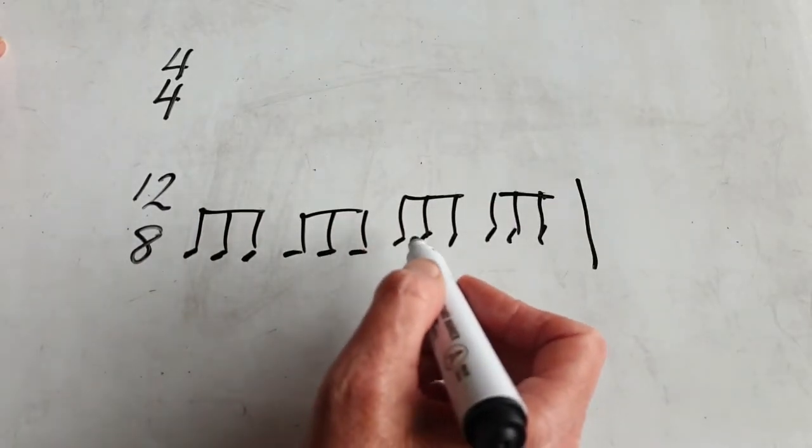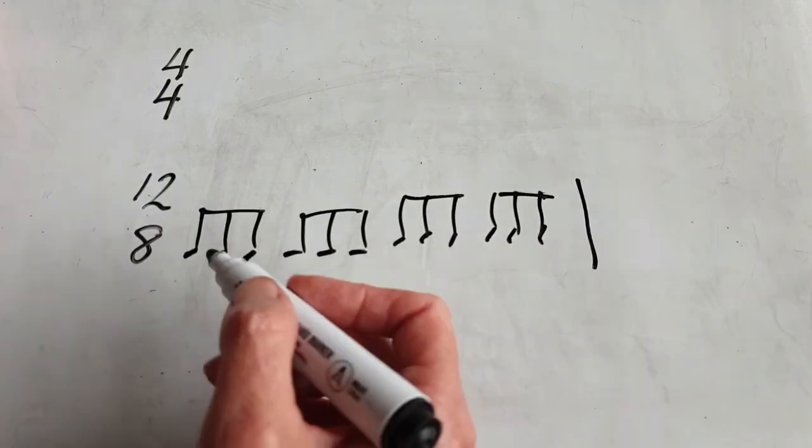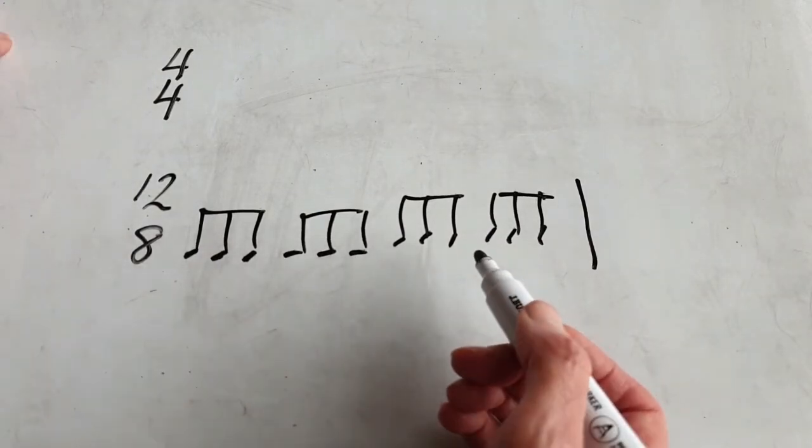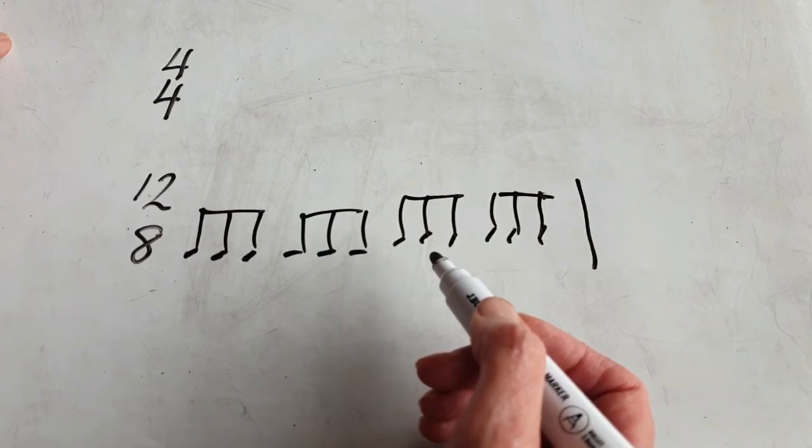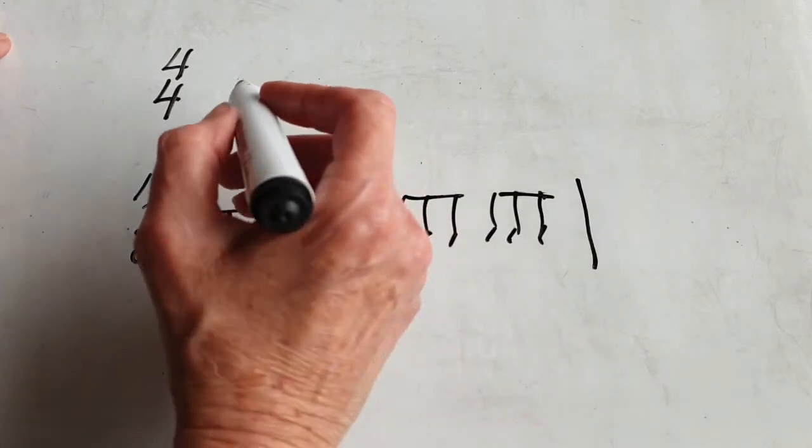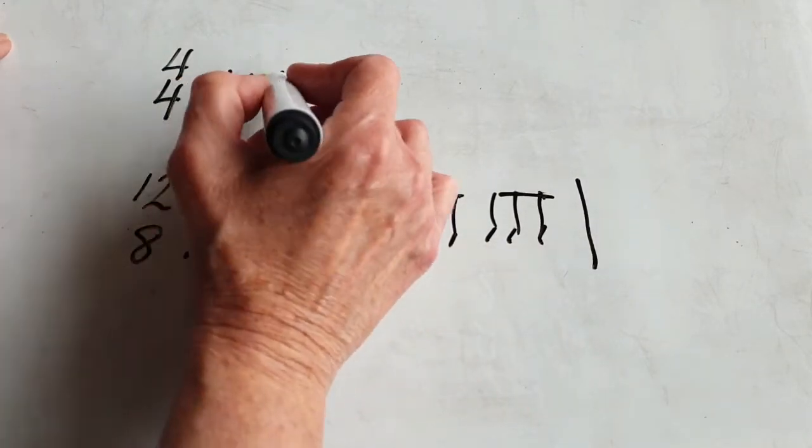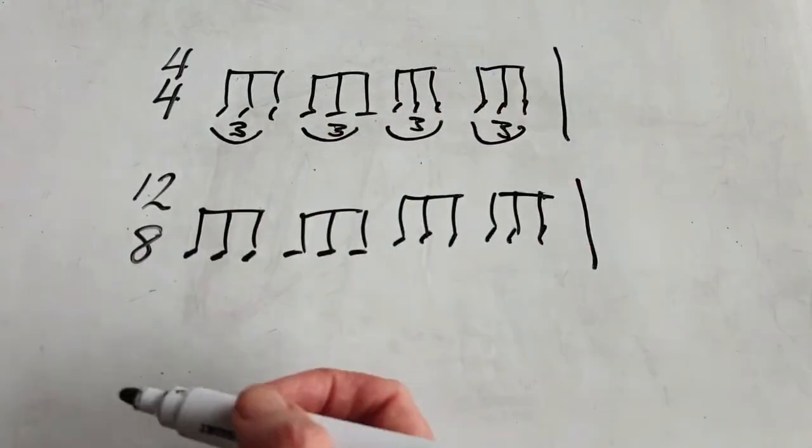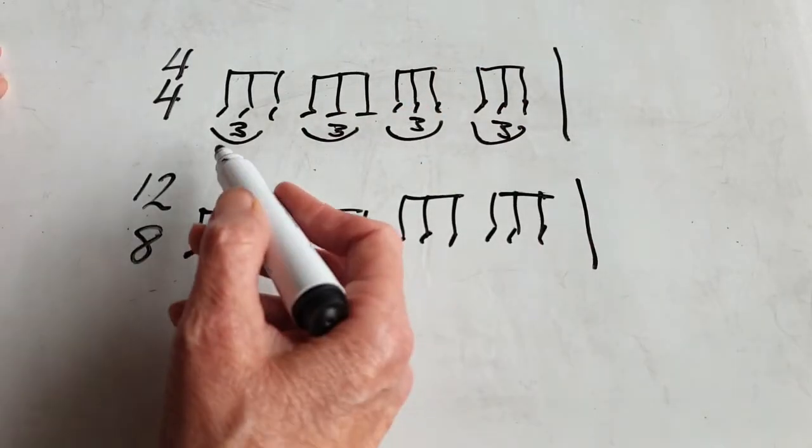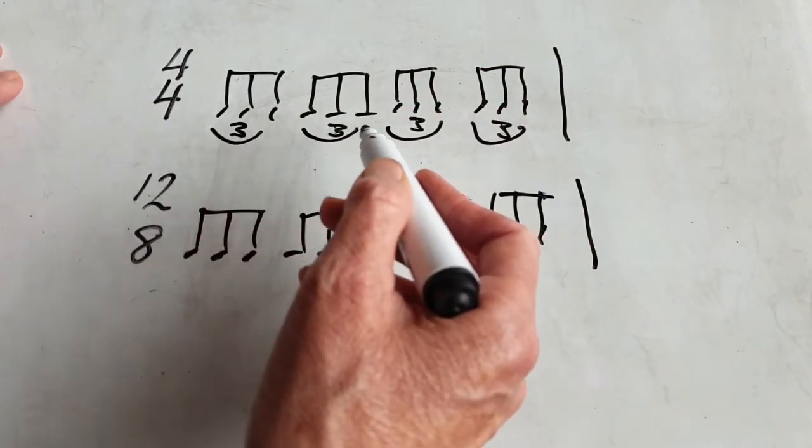One and a two and a three and a four and a. You may see it written like that, or some people that don't know about 12-8 will see it written in 4-4 like this. It sounds exactly the same, but do you want to write out the whole piece using triplets?